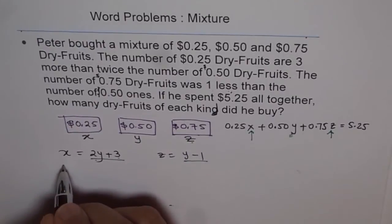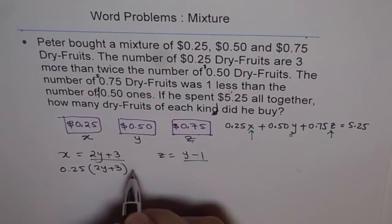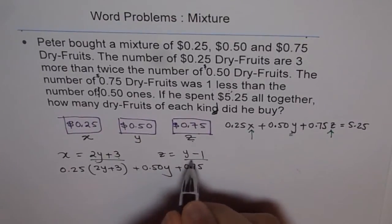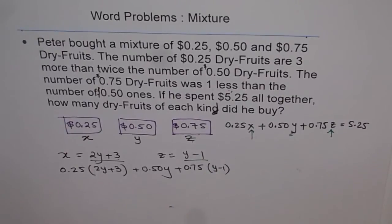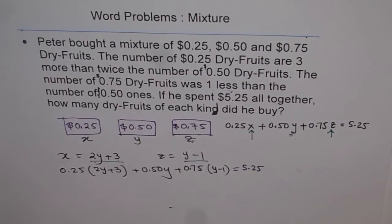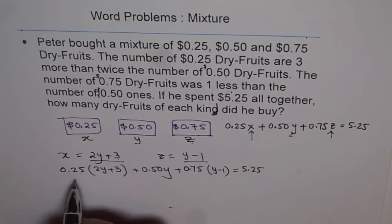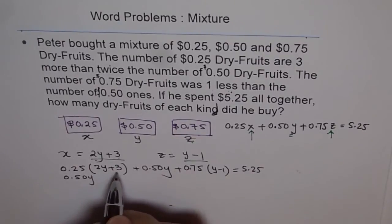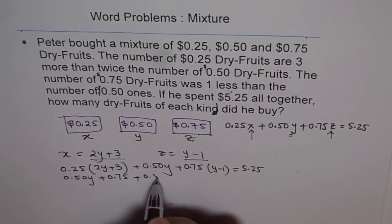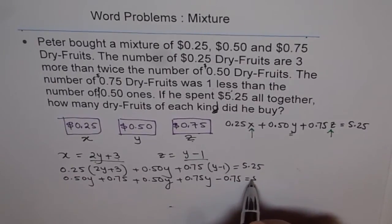So let's write it down: 0.25 times (2Y + 3) plus 0.50 times Y plus 0.75 times (Y − 1) equals 5.25. Opening the brackets: 0.25 times 2 is 0.50Y, and 0.25 times 3 is 0.75. So we get 0.50Y + 0.75 + 0.50Y + 0.75Y − 0.75.